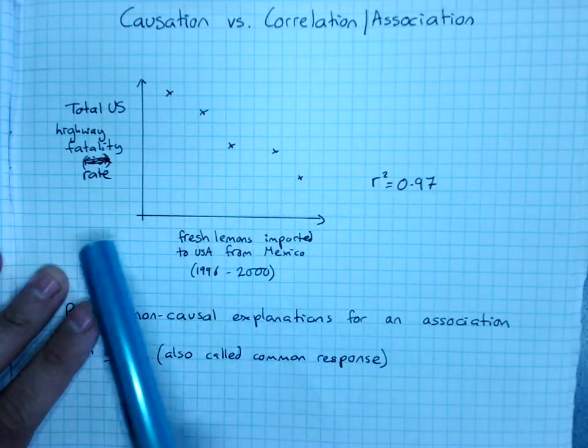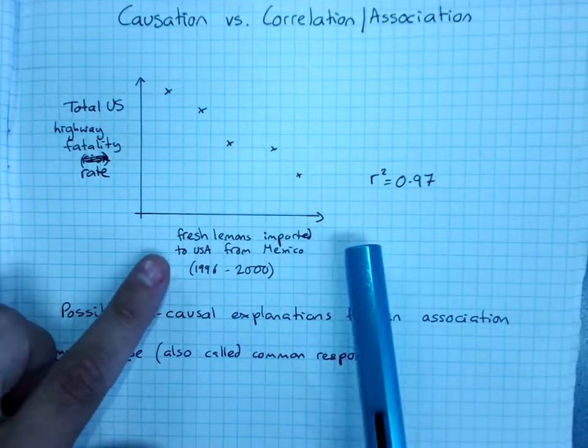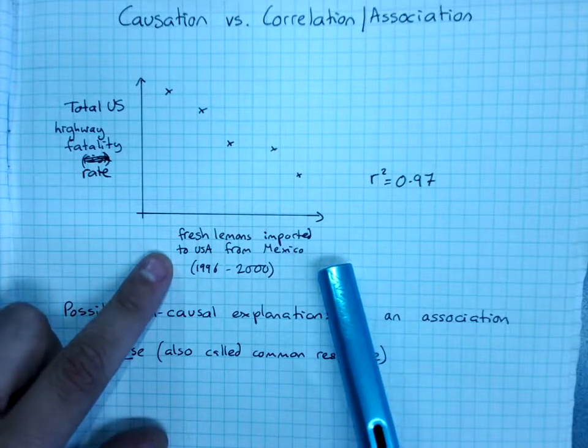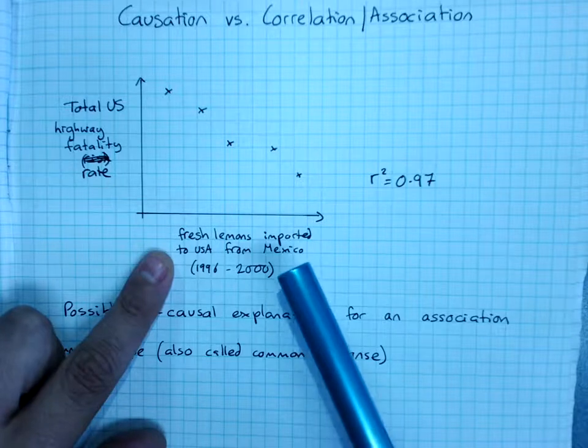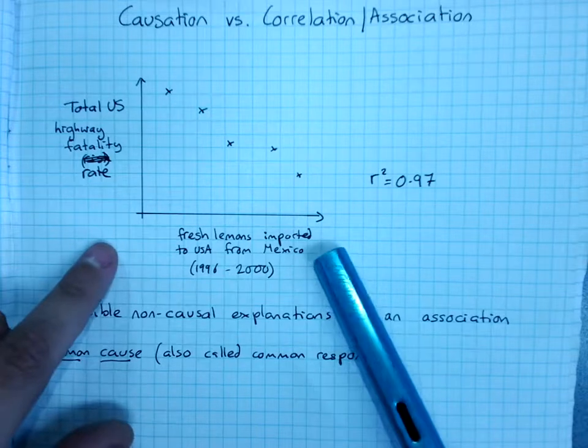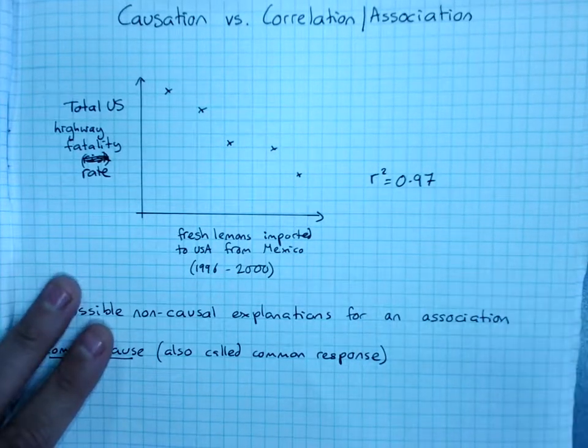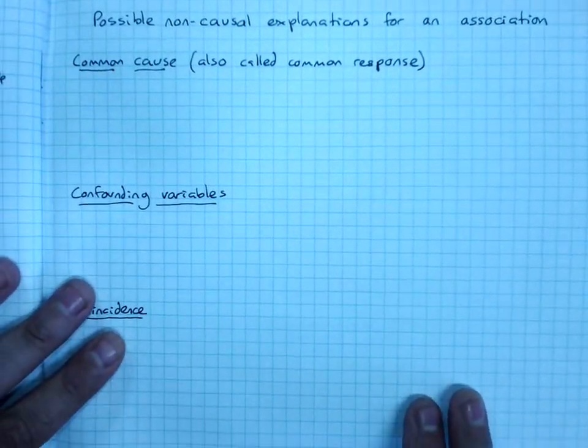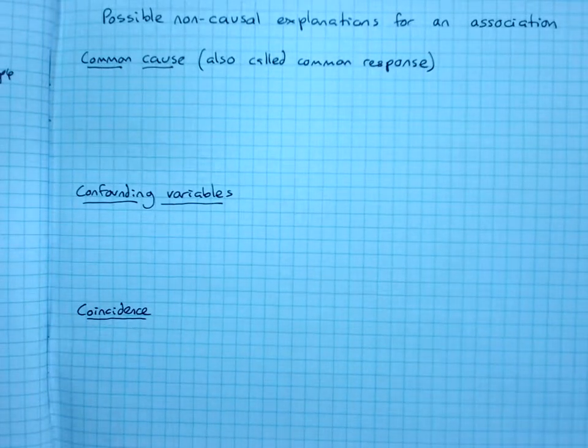So 97% of the variation in US highway fatality rate can be explained by the number of fresh lemons imported that year. Quite obviously lemons are not causing a massive reduction in the highway fatality rate. Something else is going on. Now, some of the possible non-causal explanations for where we see a correlation.